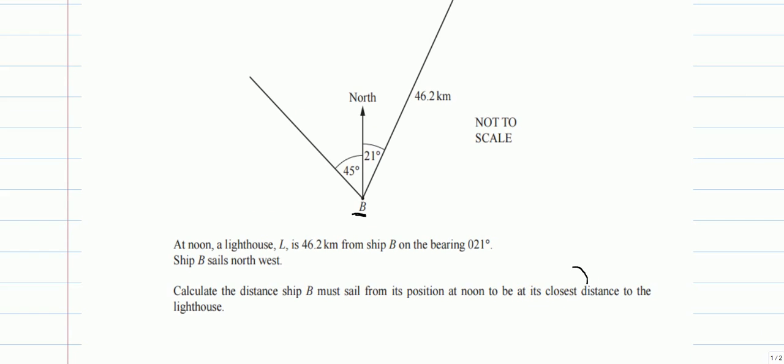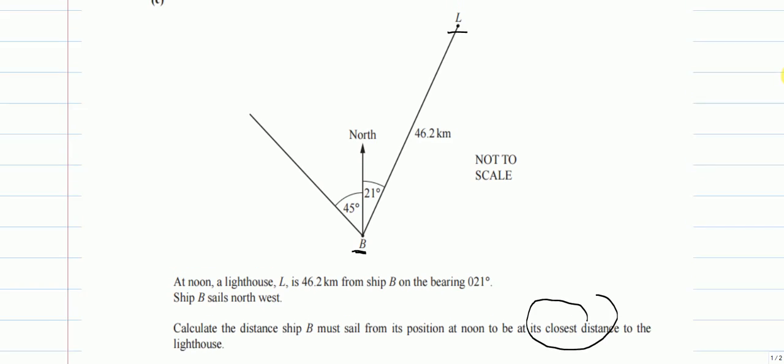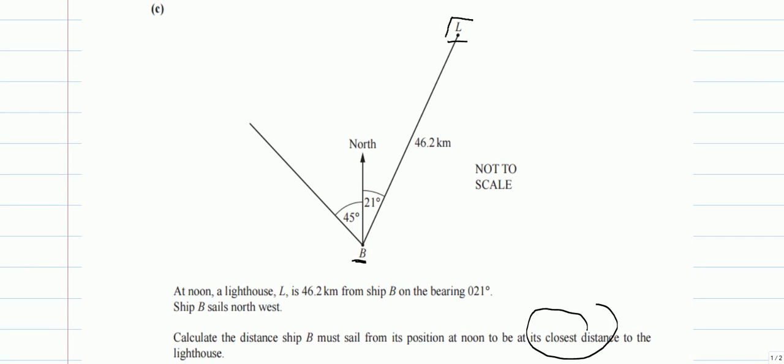Now the trick here is to understand that this lighthouse is a fixed point and this is a line, the path of ship B. To find the shortest distance between a point and a line, we have to draw a perpendicular line to the point. So whenever we draw a perpendicular line to the point, it is always the shortest distance.